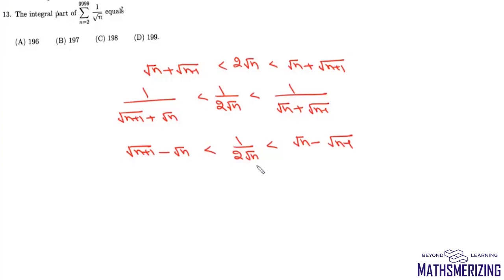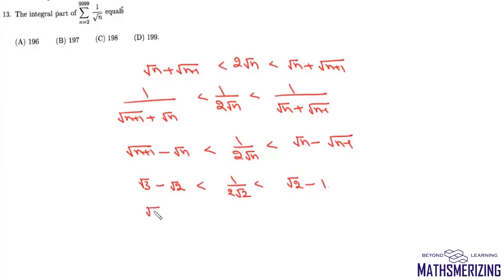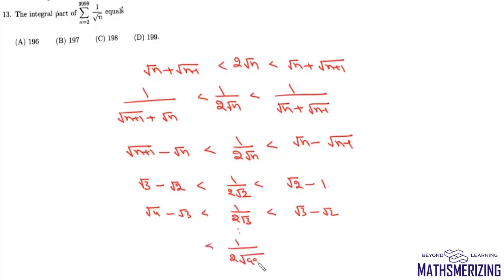Now we'll put n = 2: we get √3 − √2 < 1/(2√2) < √2 − 1. Putting n = 3: we get √4 − √3 < 1/(2√3) < √3 − √2. If we continue the series up to n = 9999...